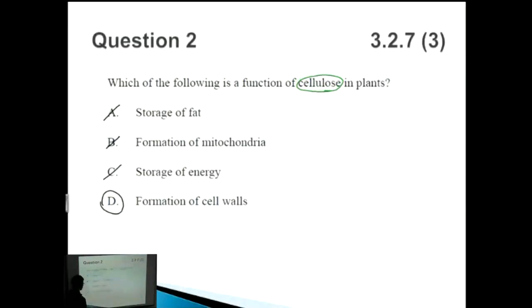The correct answer is D, formation of cell walls. I mentioned at the start of this question that cellulose is the main product which is found in cell walls, and it's what gives it the rigid structure which prevents it from bursting.